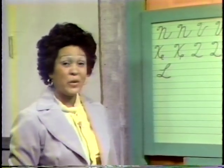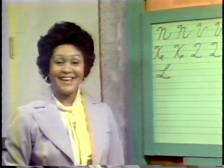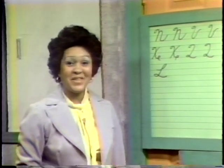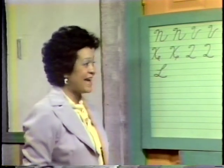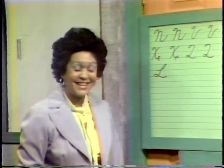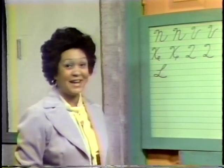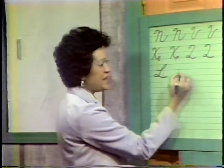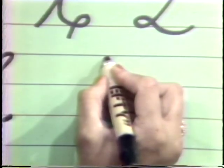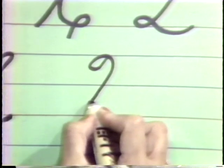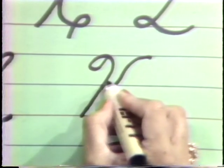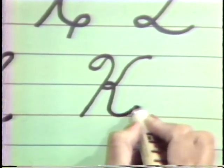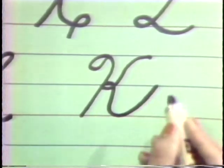Another letter that we're going to form, boys and girls, will be the letter K. Do you know the name of the family that the letter K belongs to also? It is also a member of the K letter family — you had that letter the last time we were together. Ready? You make a slanted vertical loop and you stop at your baseline. You start at your headline, slanted, making a little loop at your midline and you come up to your midline. The letter K.